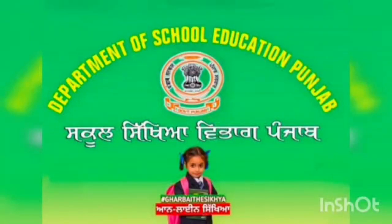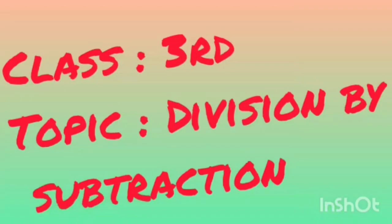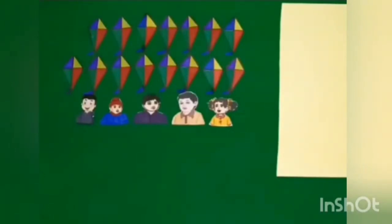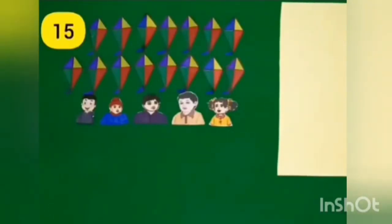A warm welcome to third class in this online maths lesson. Today we are going to do division by subtraction. The first question on the worksheet is the repeated subtraction method. Here we have the sum 15 divided by 5. We have 15 kites.